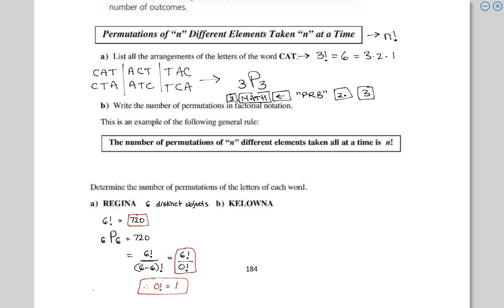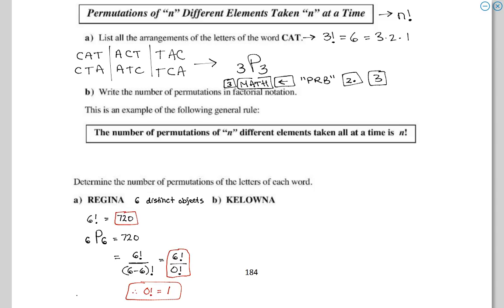We're just learning this, so I'm doing these questions in a variety of ways. In general, when you see a word like 'Kelowna,' just ask yourself: are the letters all different? Yes. How many are there? Seven. So the answer is 7 factorial. Seven different objects, you want to arrange all of them — seven blanks, 7P7 is 7 factorial.